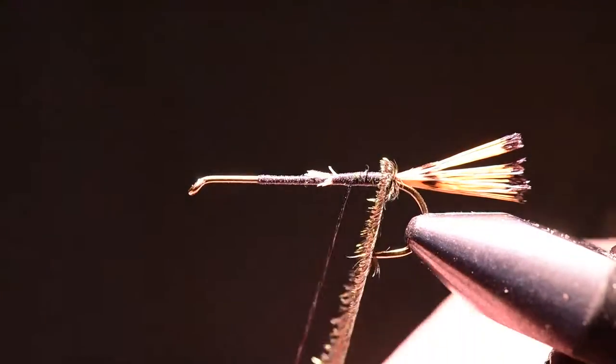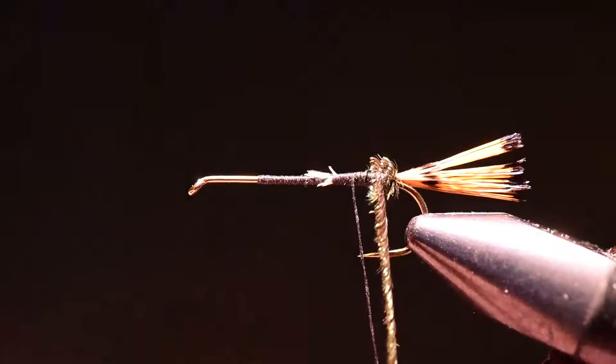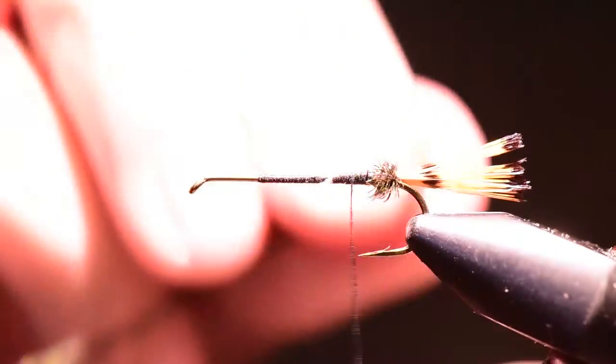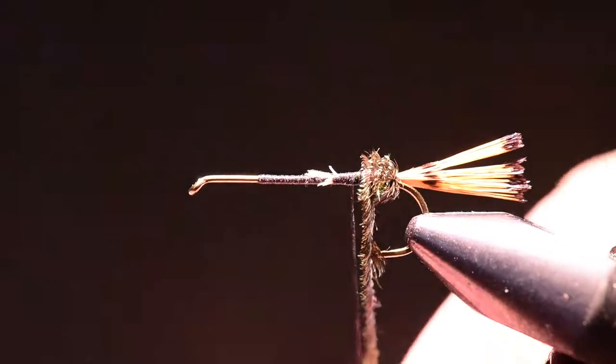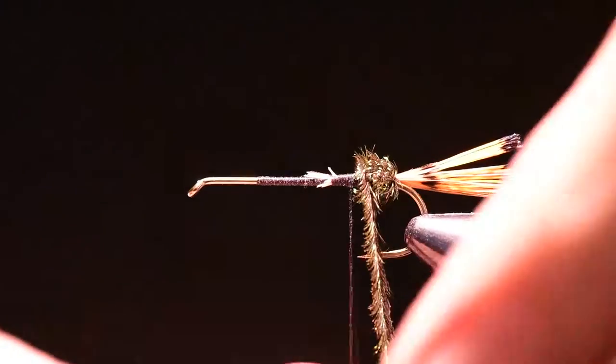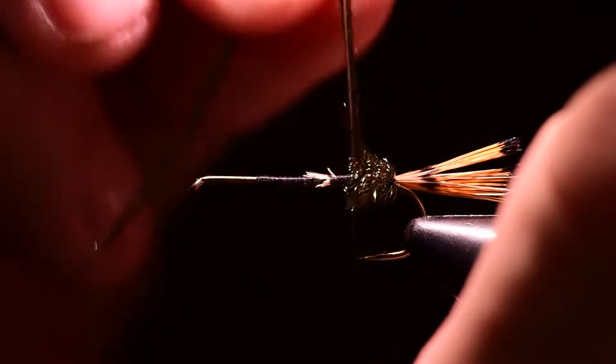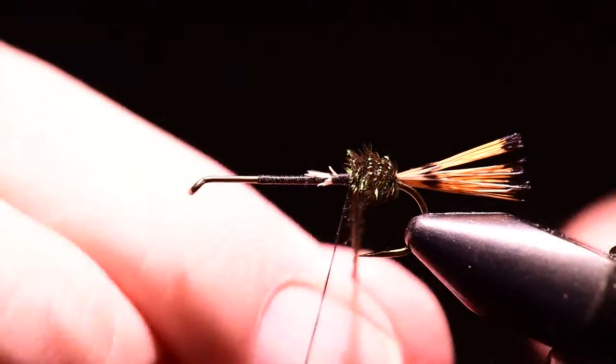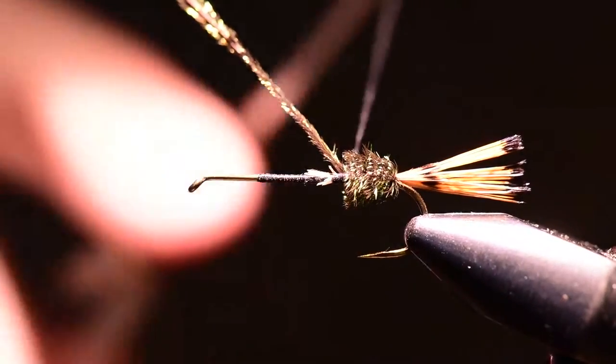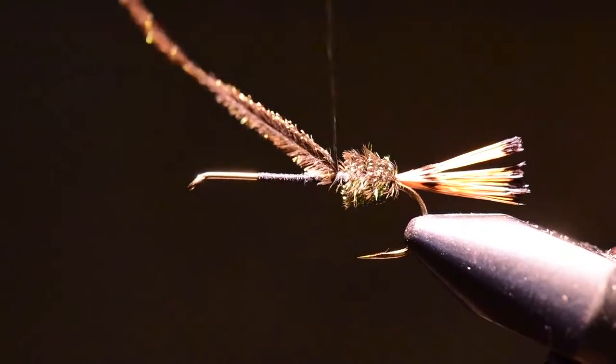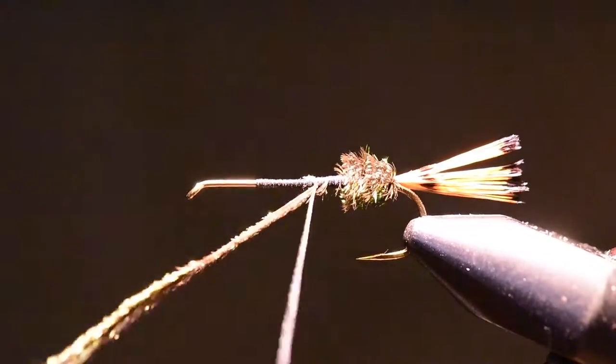Note where I've placed my thread. Taking that body length I've set the thread right at about the one-third point. I'm going to build one-third peacock, one-third floss, and one-third peacock as I build this body on the Royal Trude. So I'm winding forward all the way up to my thread and then I'll tie over it and clip off the excess.